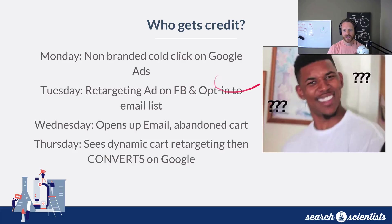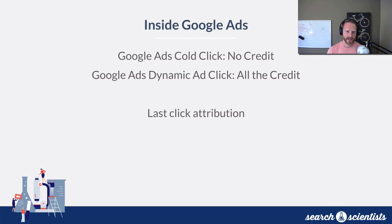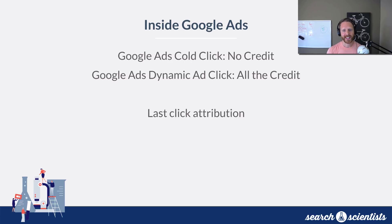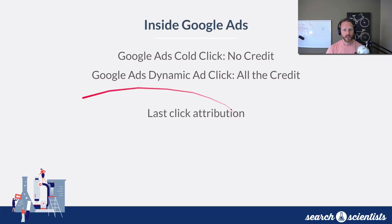On Thursday they see a dynamic cart retargeting ad, then convert. Who gets the credit? Inside Google Ads in that example, we would see the Google Ads cold click on search get zero credit, and then the Google Ads dynamic ad at the end where they did end up converting would get all the credit. That is because every single Google Ads account is set for last click attribution only — meaning 100% of the credit goes to the last click and nobody else gets anything.